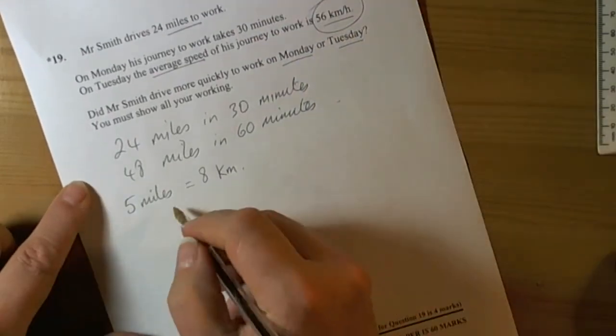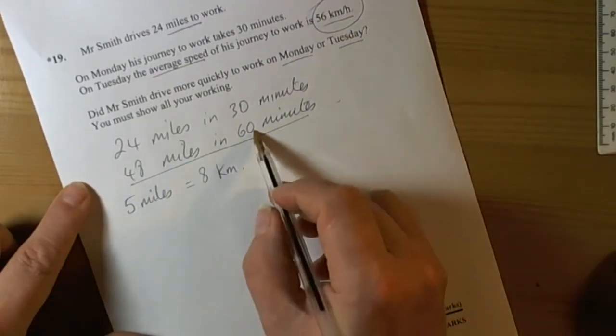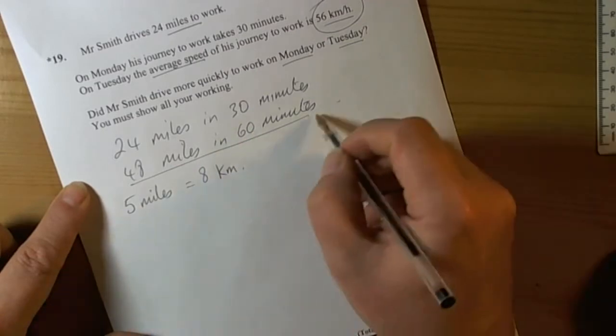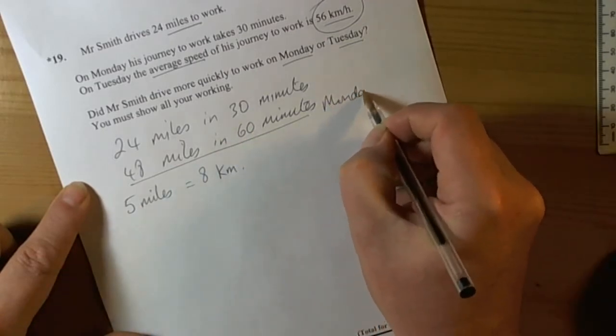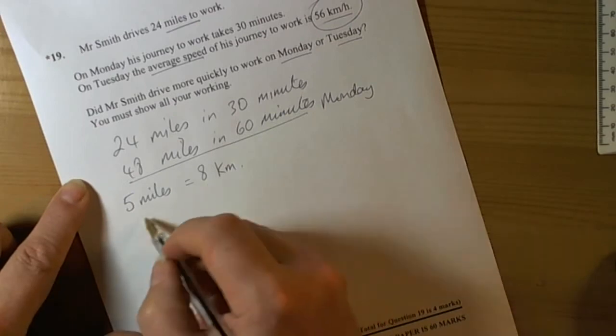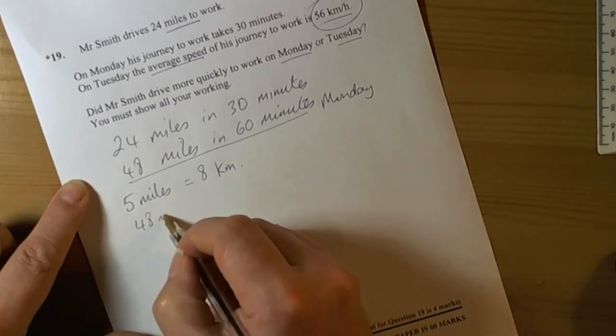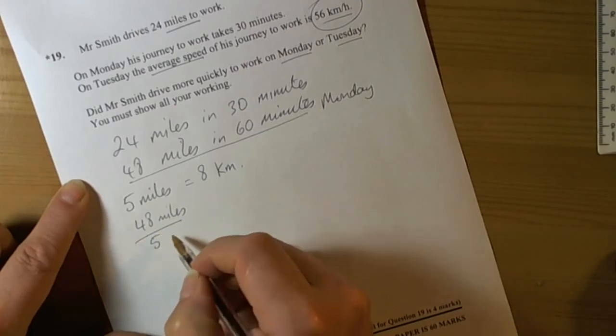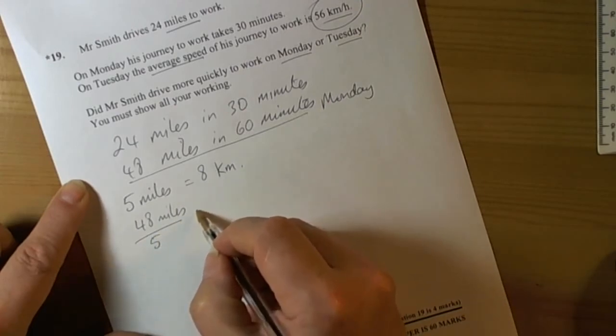So we know that he did 48 miles in an hour on Monday. So 48 miles divided by 5 will tell us how many kilometers that is.